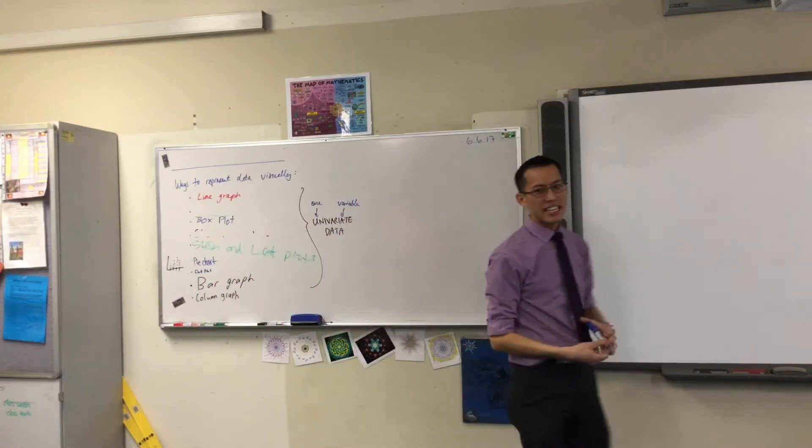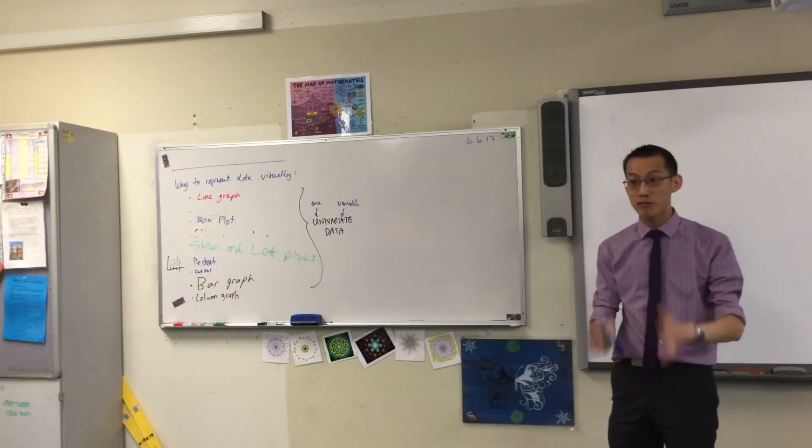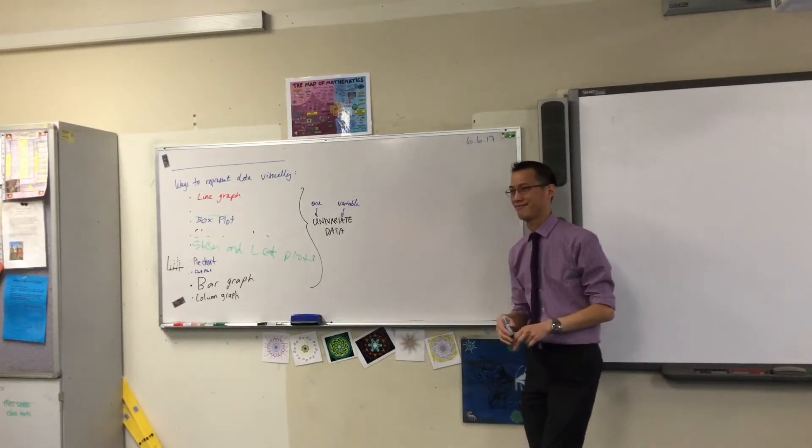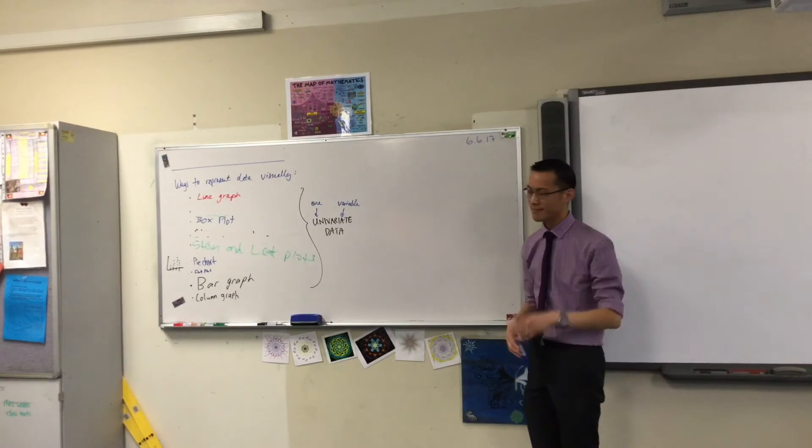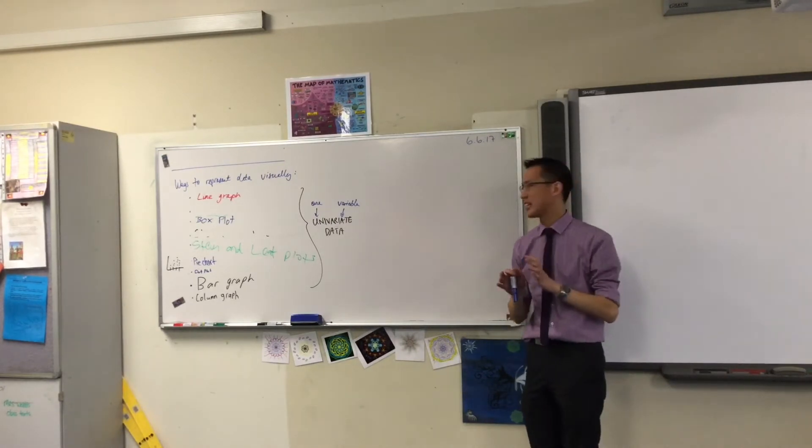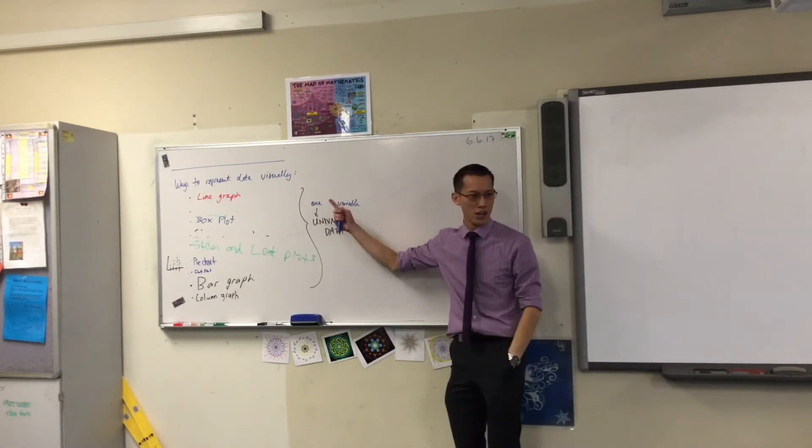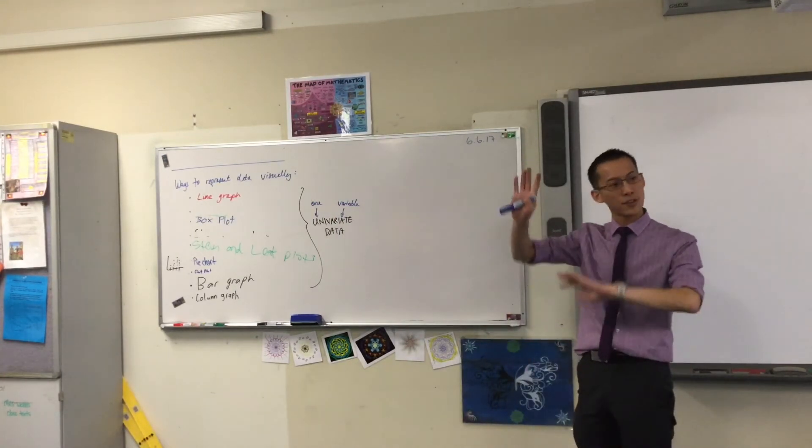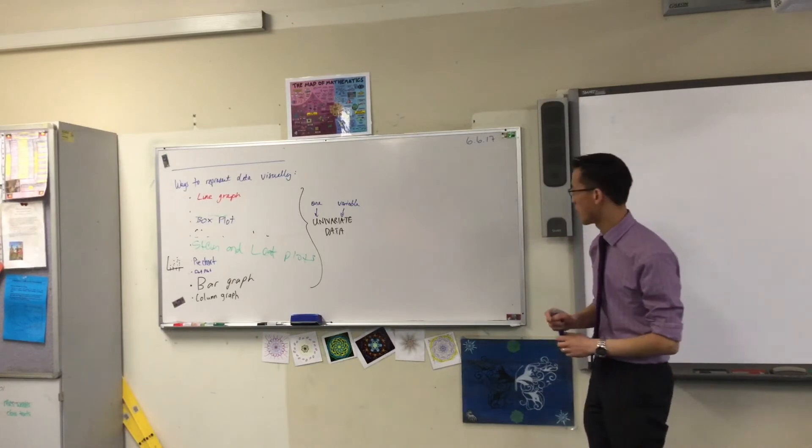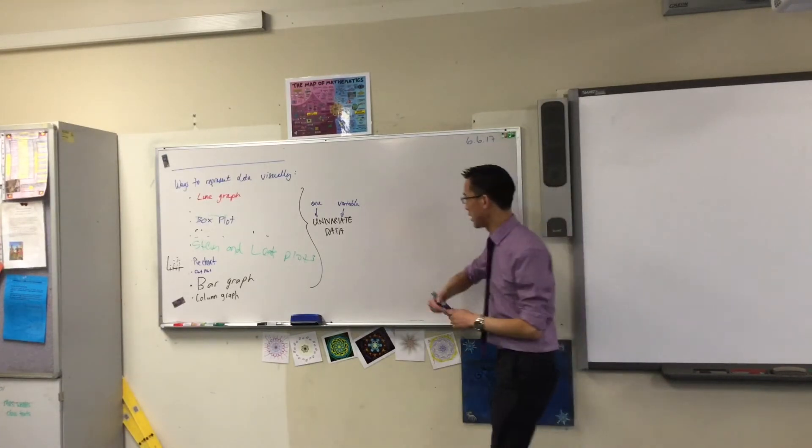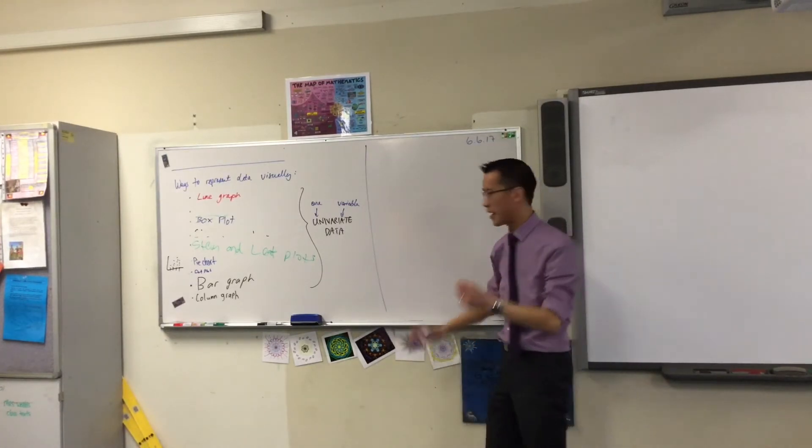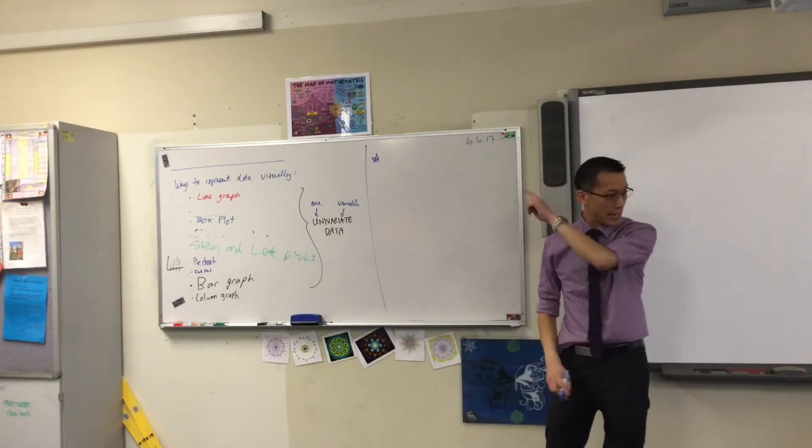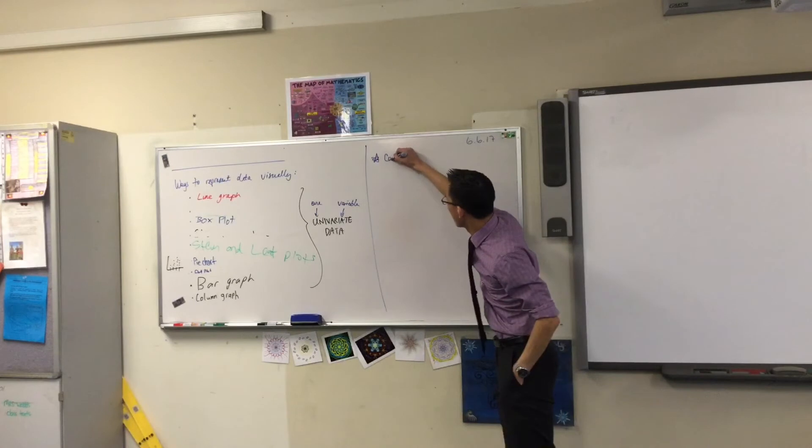Now, this is extremely restrictive. Extremely, extremely restrictive. Because often we actually have more than just one variable, one value that we're interested in. Frequently, we're interested in comparing different things in relation to each other. So, for example, underneath here, as a little subheading, can you write for me underneath your list, comparing variables?